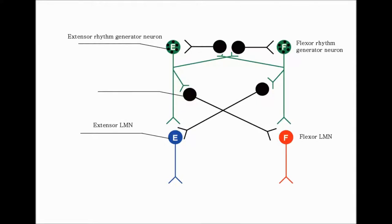The end result of activating those interneurons is that the axon terminal of that interneuron will release neurotransmitters. Those neurotransmitters will cause hyperpolarization of the next neuron, and the result will be silencing that neuron — no more action potentials.